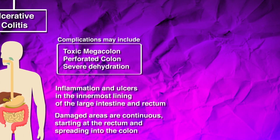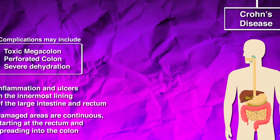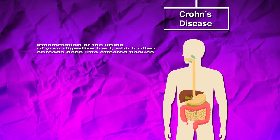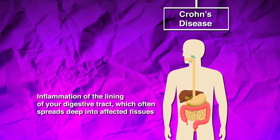Crohn's disease is characterized by inflammation of the lining of the digestive tract, which often spreads deep into affected tissues. Damaged areas appear in patches that are next to areas of healthy tissue.